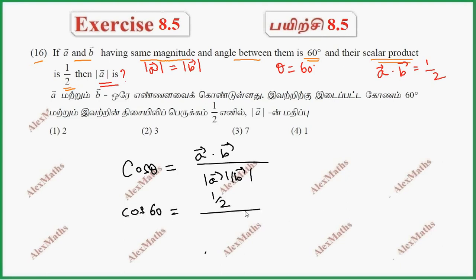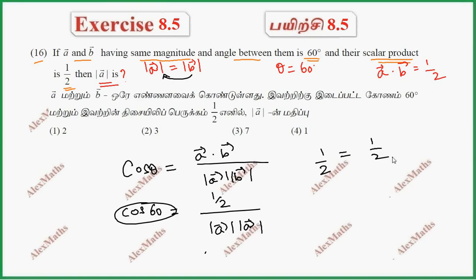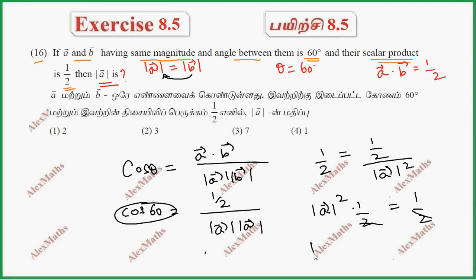So the cos value is 1/2. So 1/2 equals 1/2 divided by mod A squared. Simplifying: 1/2 equals 1/2 into 1/2 cut upon mod A squared, which gives mod A squared equal to 1, so mod A equals 1.